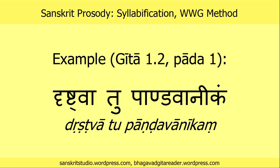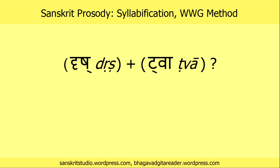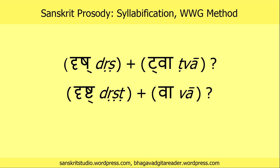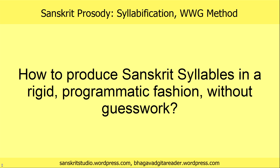Take, for example, this verse in the Gita: drishtva tu panavani kom. Here, 'tu' is unproblematic to syllabify, but what about 'drishtva'? Should we do it as 'drisht' and 'twa', as 'drisht' and 'va', or perhaps as 'dr' and 'shtva'? How to produce Sanskrit syllables in a rigid, programmatic fashion without guesswork, or with minimal guesswork?